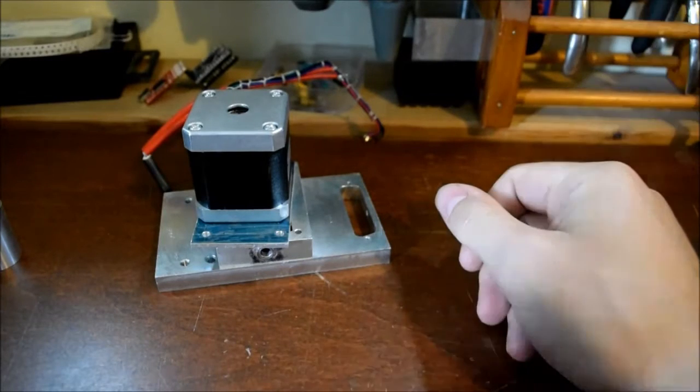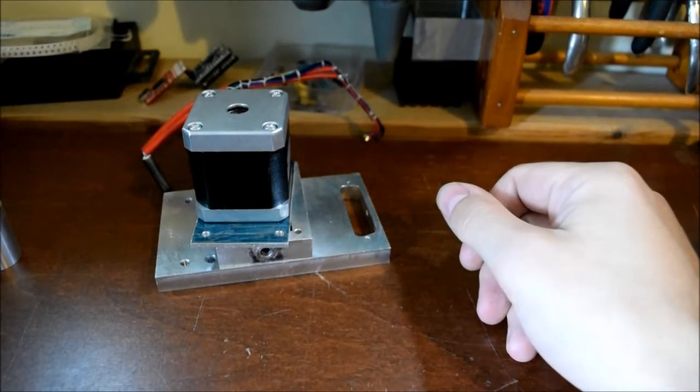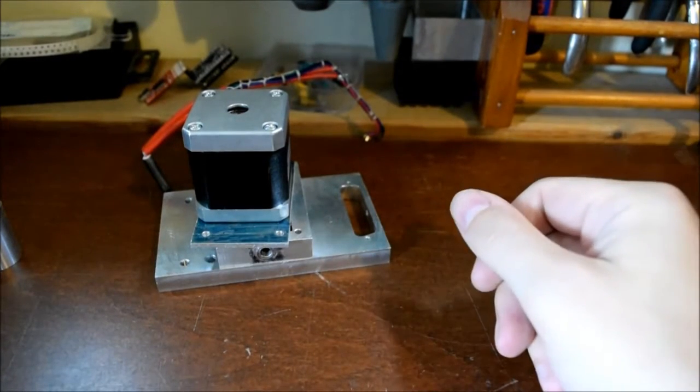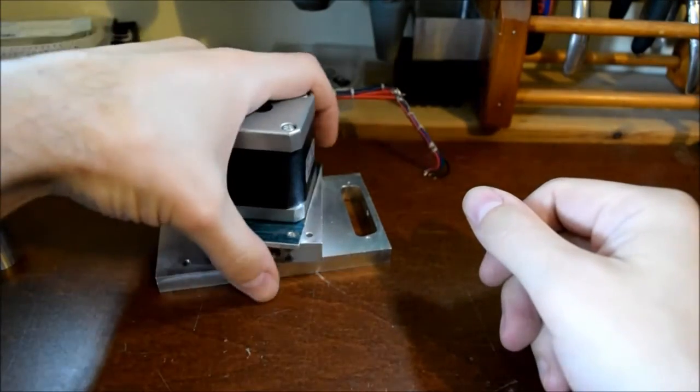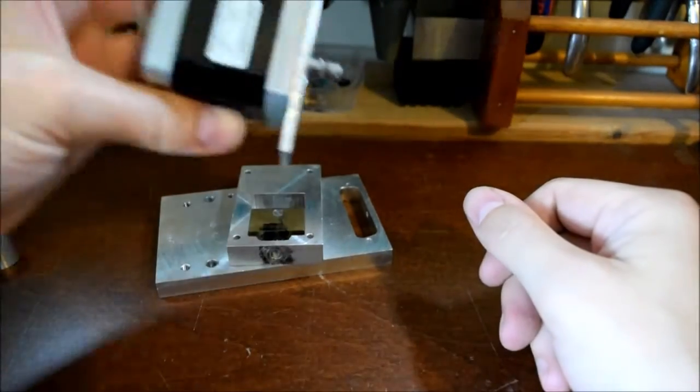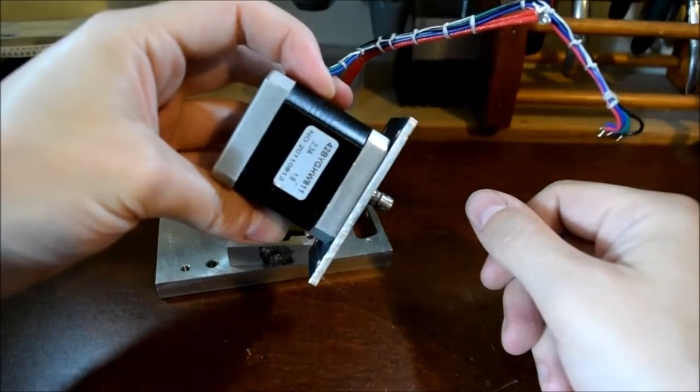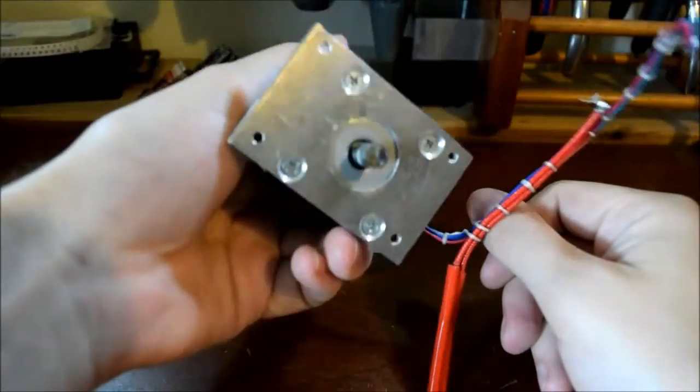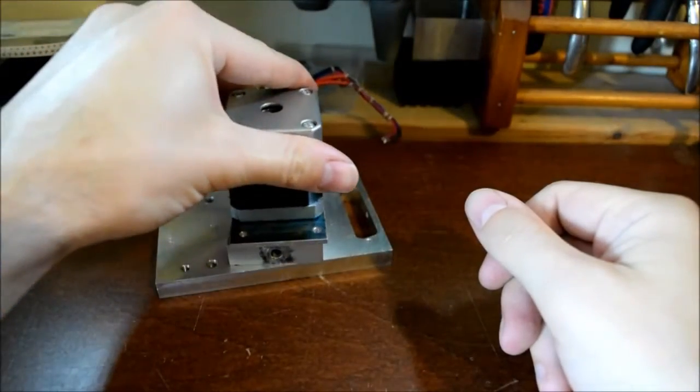So this is the Mark II version I'm developing now, which is rather more advanced. Now, the main problem here is the weight. Most of the weight is this, because it's a big lump of iron. So I thought, how could I improve that?